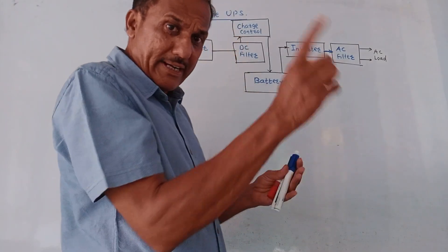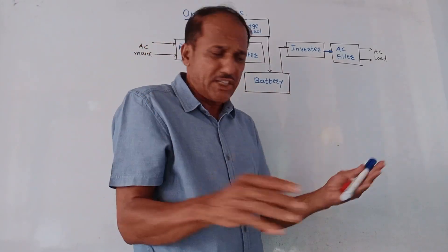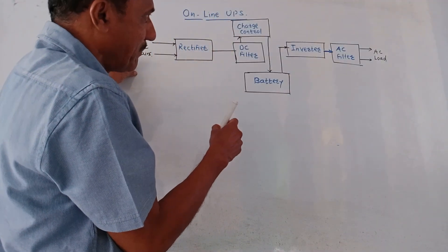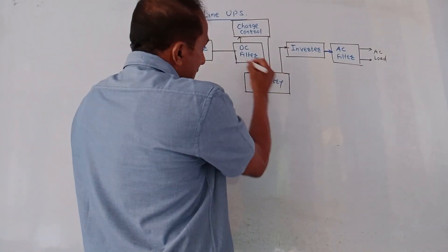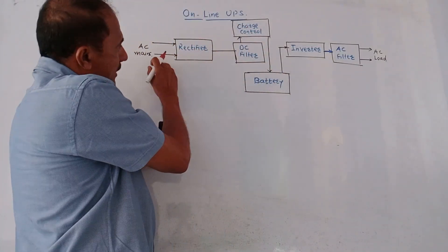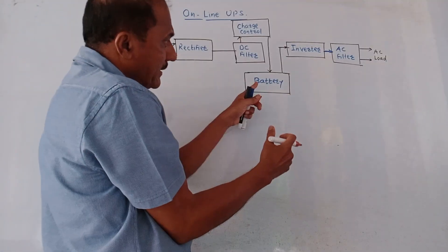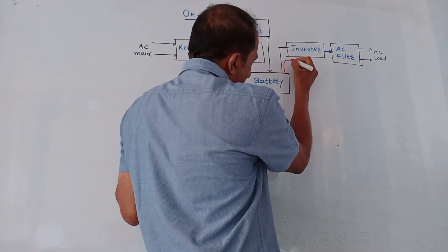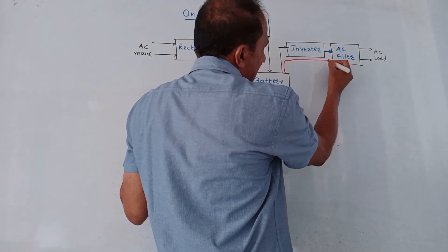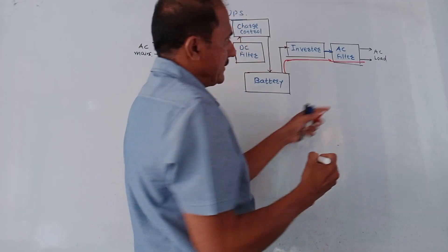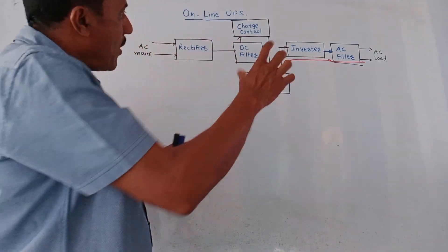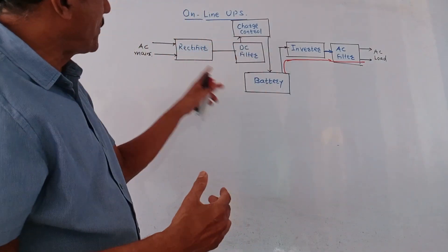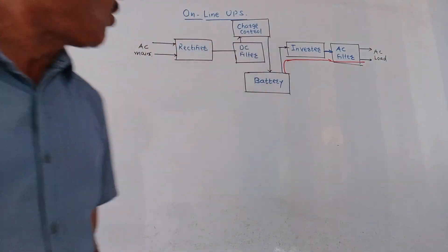Whenever there is a power failure, no switching action is required. When AC mains fails, that circuit goes off, but the battery has stored energy and is directly connected to the inverter, then to the filter, and then to the AC load. So the power supply is continuous. Ideally there is zero switching time, and this type of UPS is called online UPS.